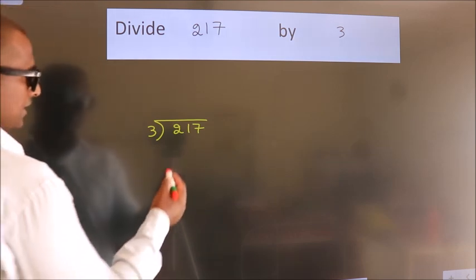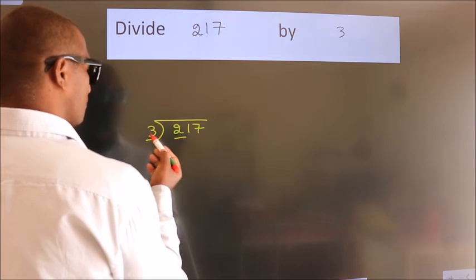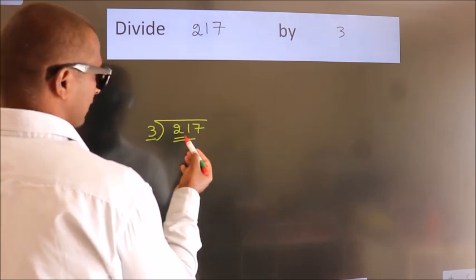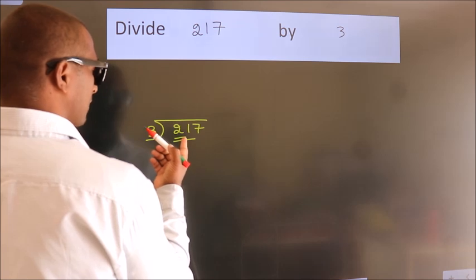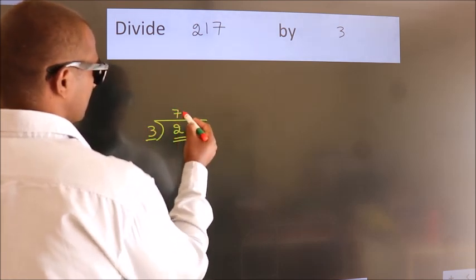Next. Here we have 2, here 3. 2 is smaller than 3, so we should take 2 numbers: 21. When do we get 21? In the 3 table, 3 times 7 is 21.